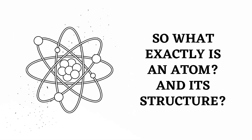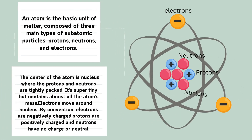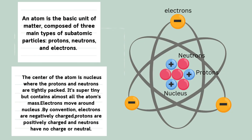So what exactly is an atom and its structure? An atom is the basic unit of matter, composed of three main types of subatomic particles: protons, neutrons, and electrons. The center of the atom is the nucleus, where protons and neutrons are tightly packed. It's super tiny but contains almost all the atom's mass.